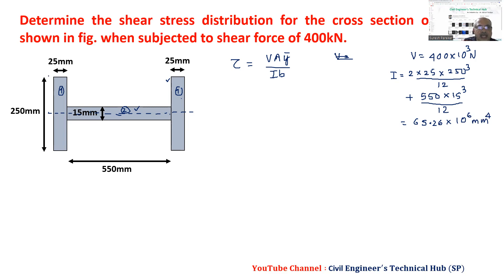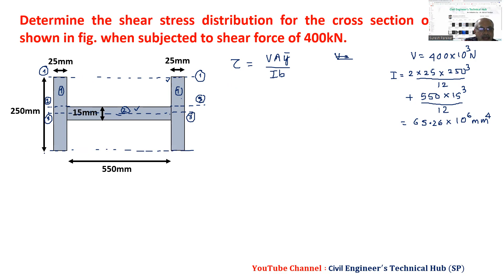B has different values at different locations. We will consider section 1-1 at the top, then 2-2 at the junction, then 3-3 at the neutral axis, and 4-4 at the bottom. As we have seen, at the top and bottom there is no area above or below, so tau at 1-1 equals tau at 4-4 equals zero.